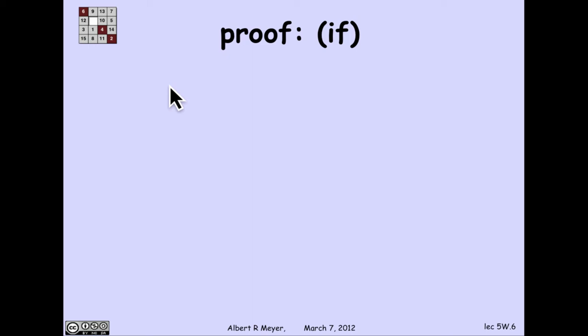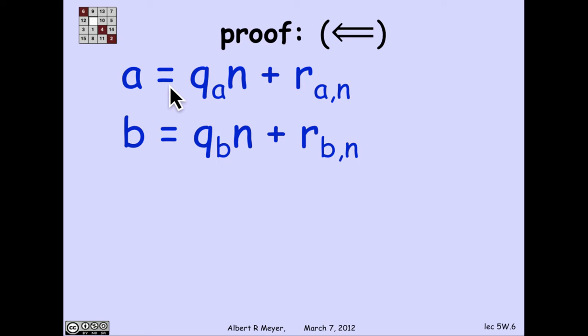So the if direction of proving the remainder lemma, that they're congruent if and only if they have the same remainder, the if direction here in an if and only if is from right to left, is that I've got to prove that if they have the same remainder, then they're congruent.